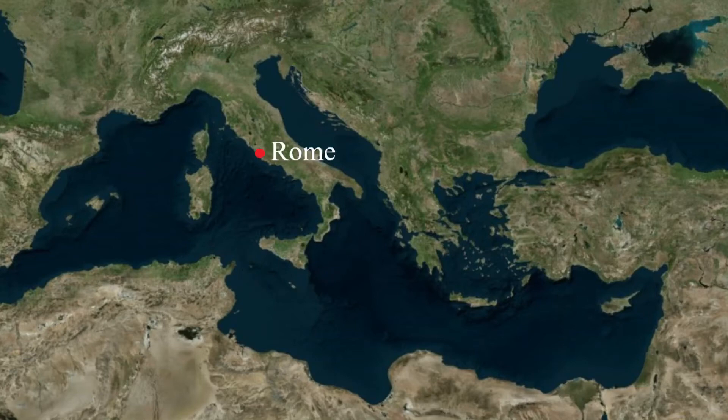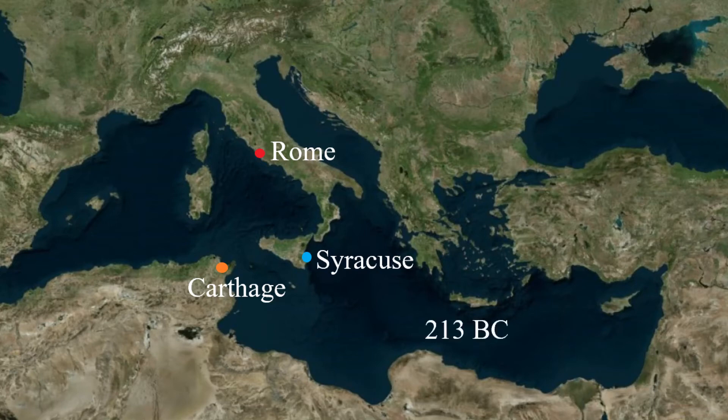Sicily was a strategic point between Rome in the north and Carthage in the south. Archimedes lived in Syracuse and the city came under Roman siege in 213 BC.